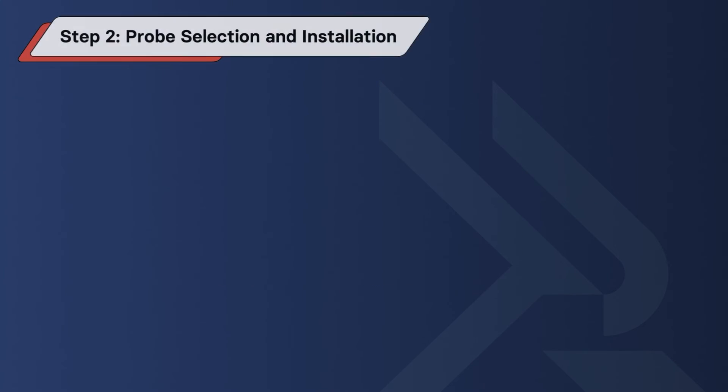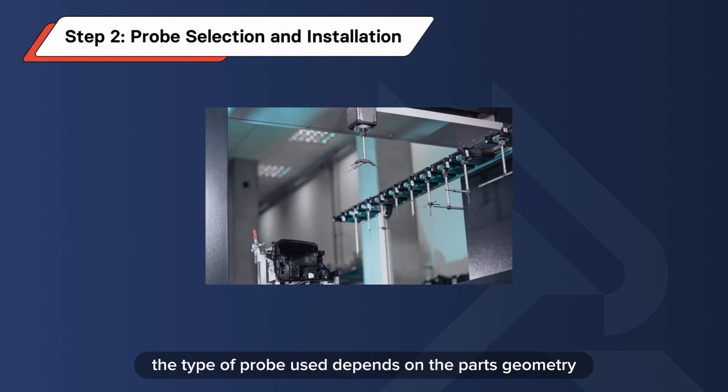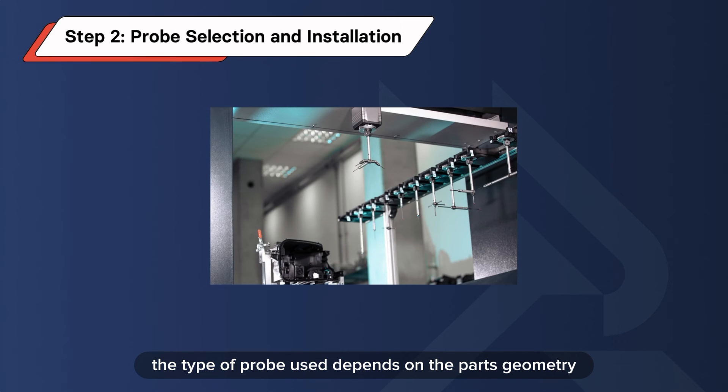Step 2 is probe selection and installation. The type of probe used depends on the part's geometry and material. Probes are attached to the CMM's measuring head. So, it is important to select a suitable probe for accurate results.